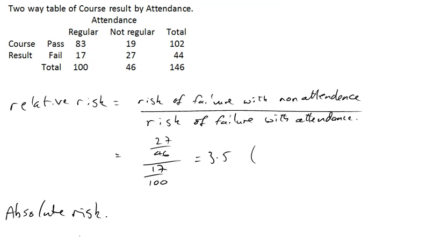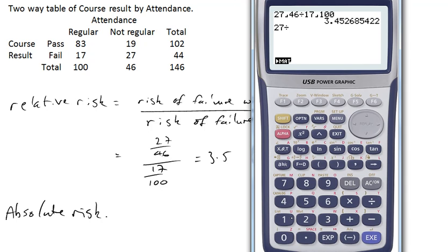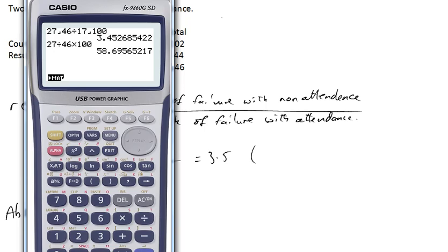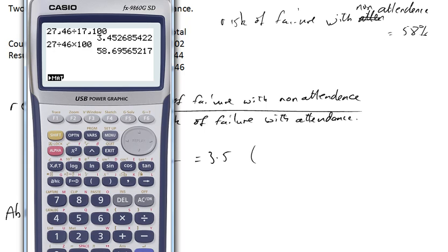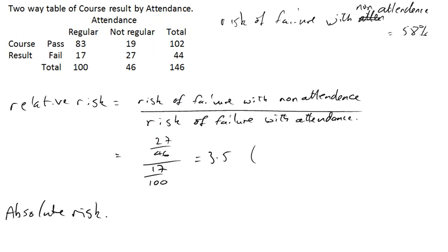The probability of failure with non-attendance is 58. That's 58.7 really, so let's just quantify that: 58.7 percent.